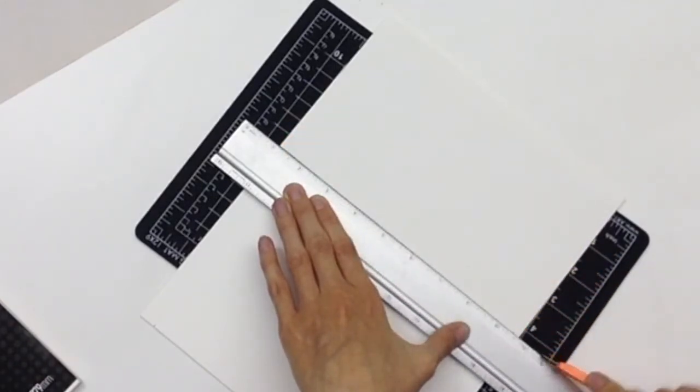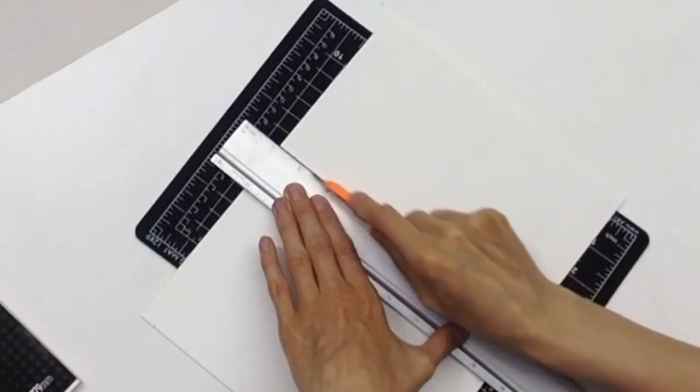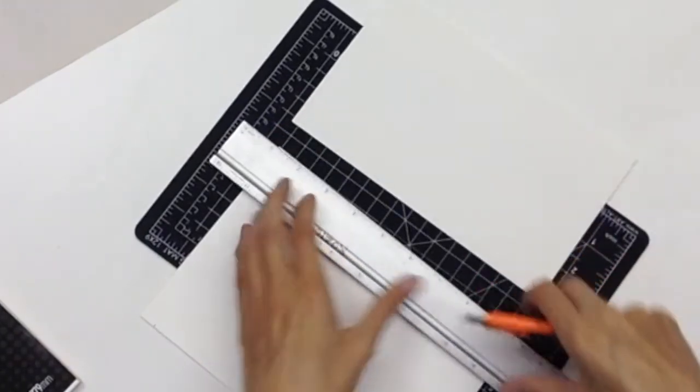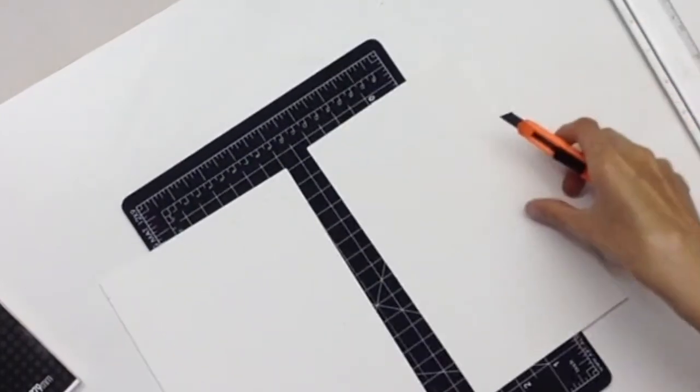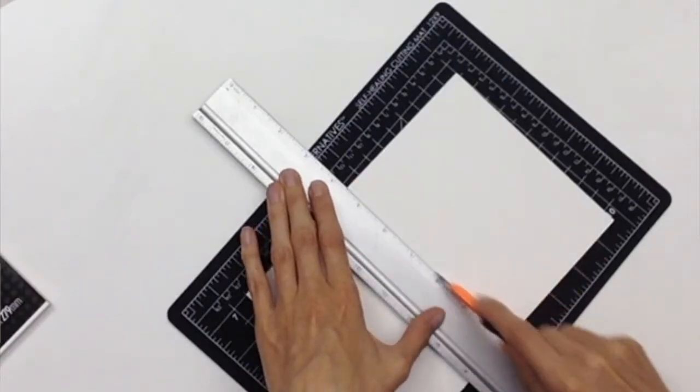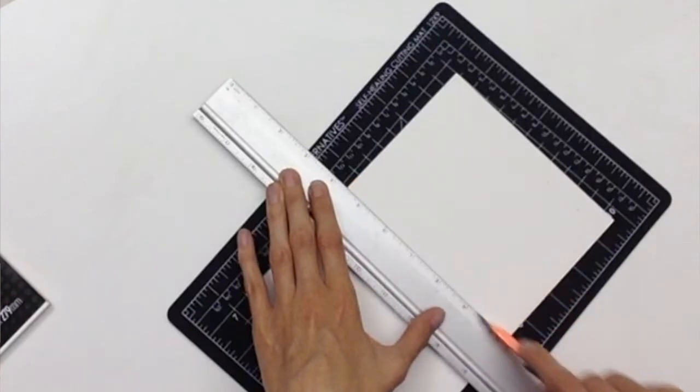And notice how I'm scoring the paper several times until it's fully cut, rather than forcing the blade through all at once. Set this to the side. And this process then will be repeated as many times as needed until all of the paper is cut down to size.